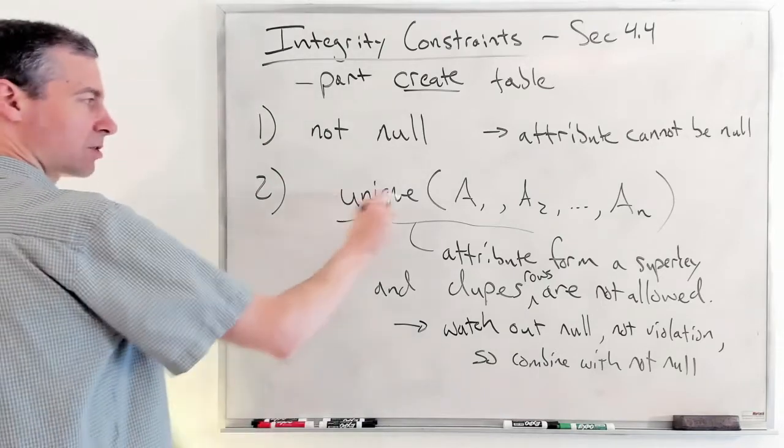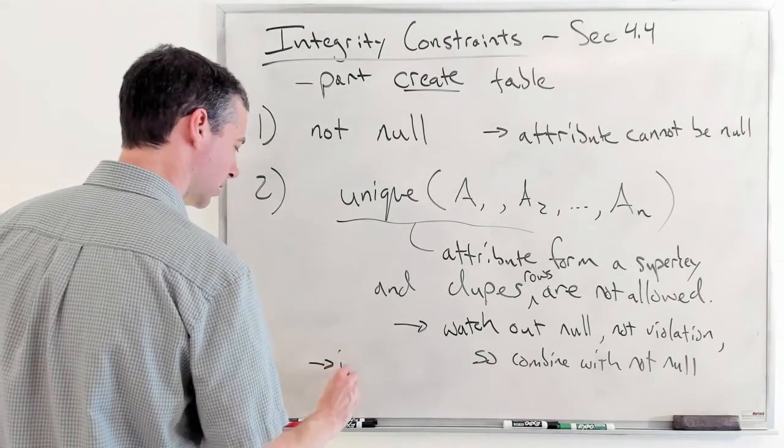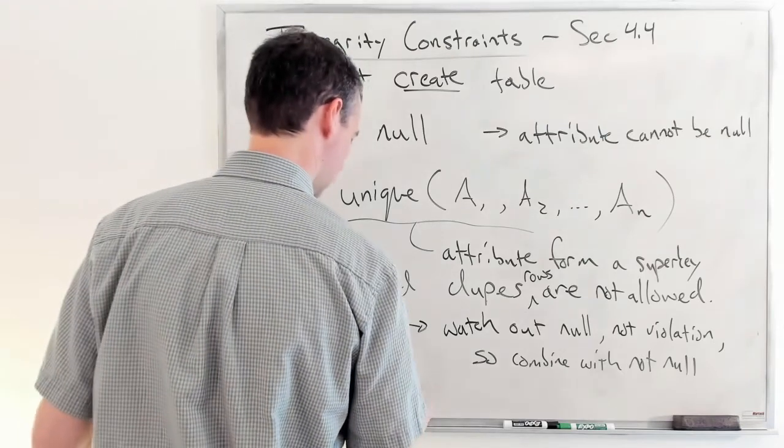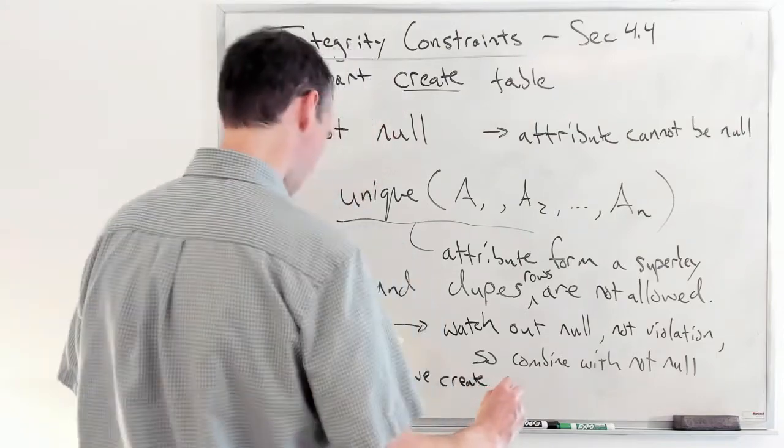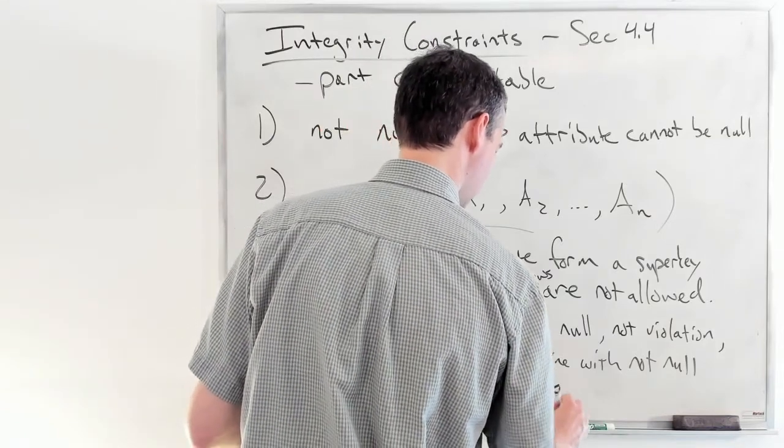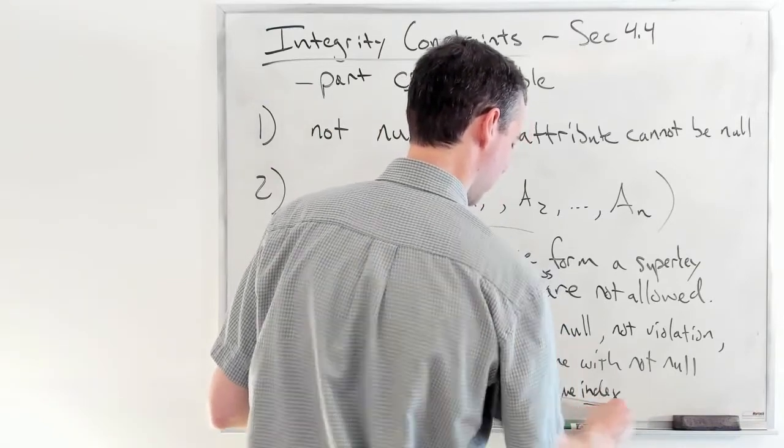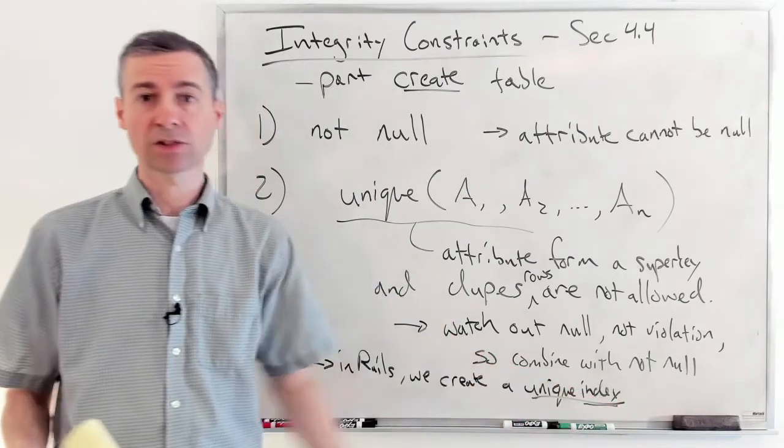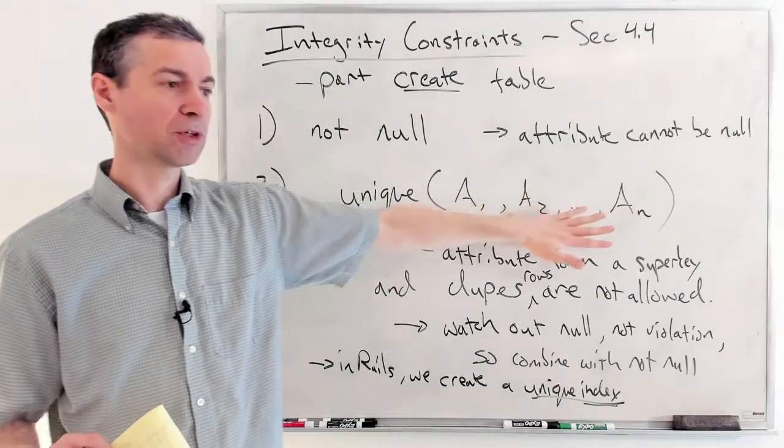Now in Rails, we can't just do this unique thing. And so in Rails to enforce uniqueness, what we do is we create a unique index on the columns that we want. We'll talk about indexes later.